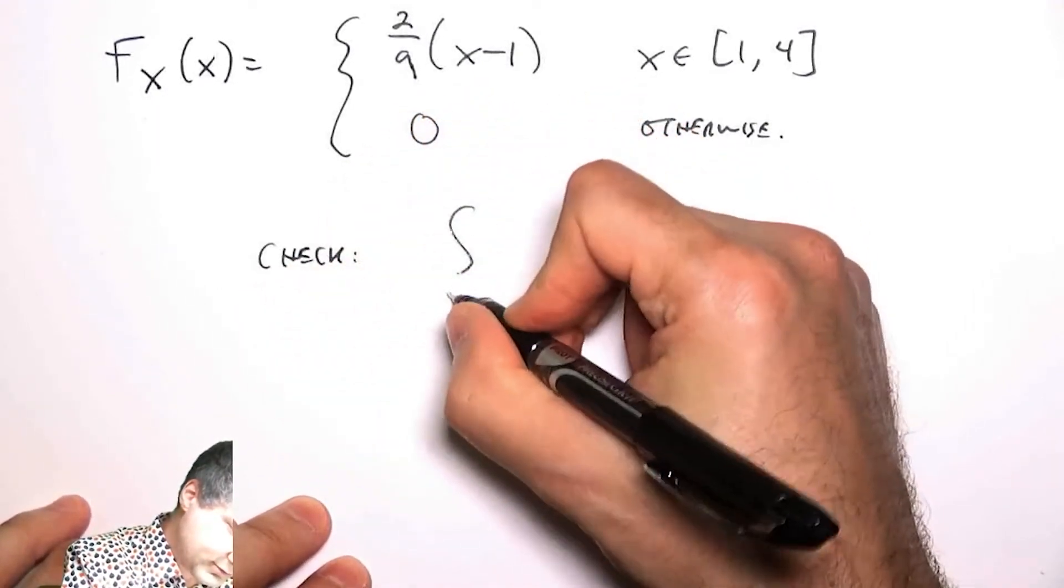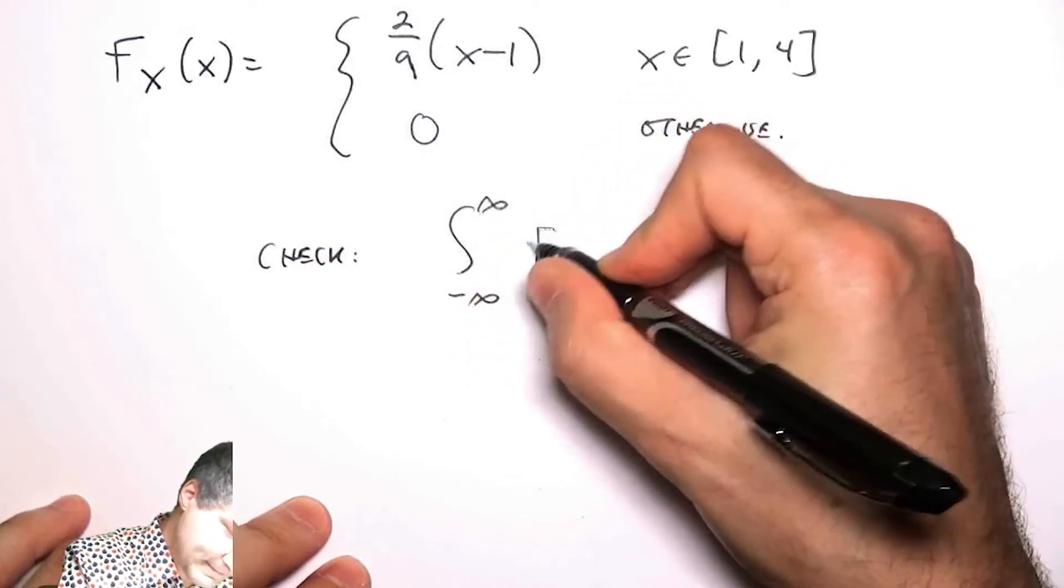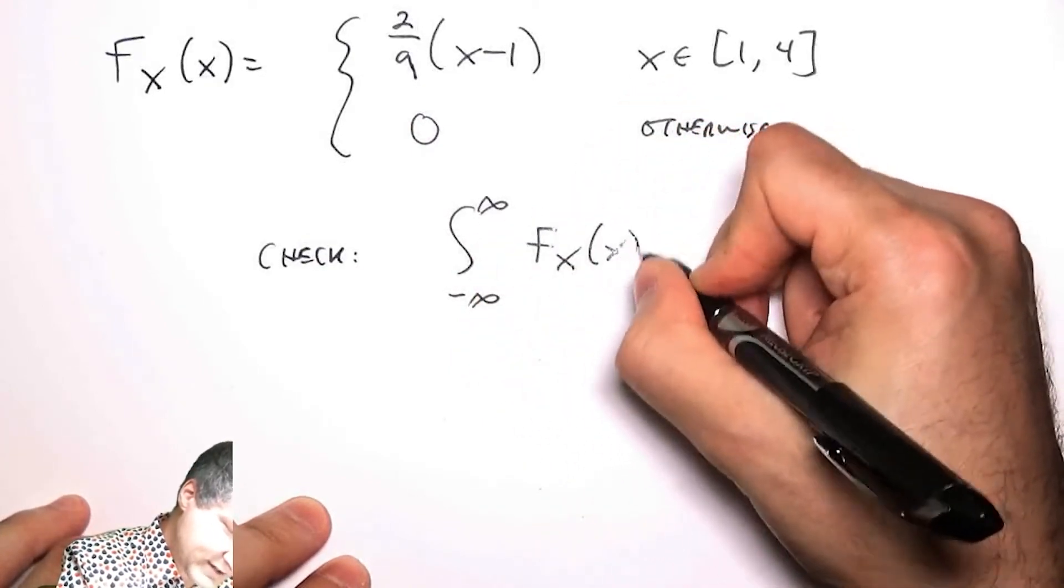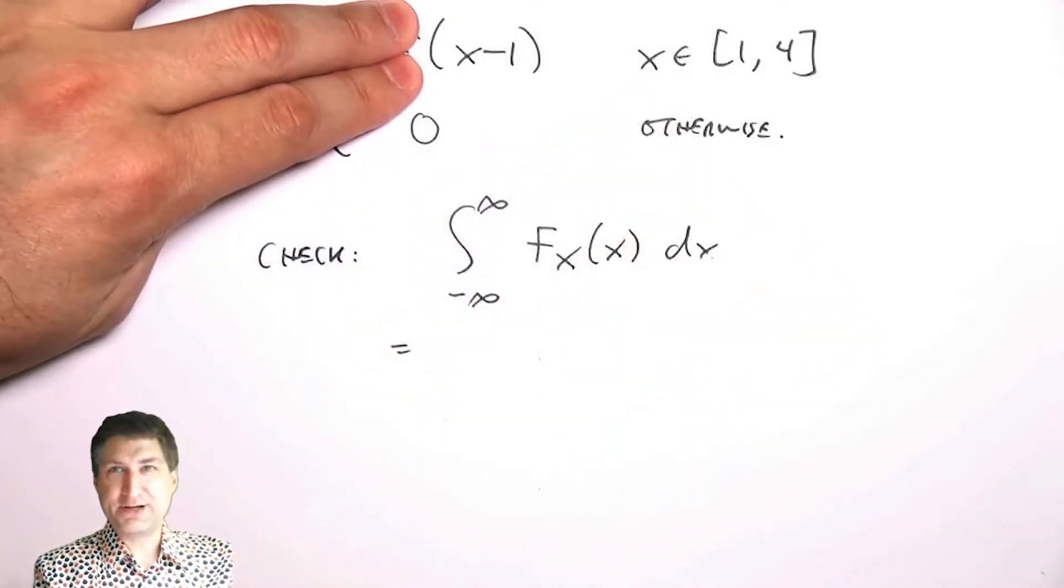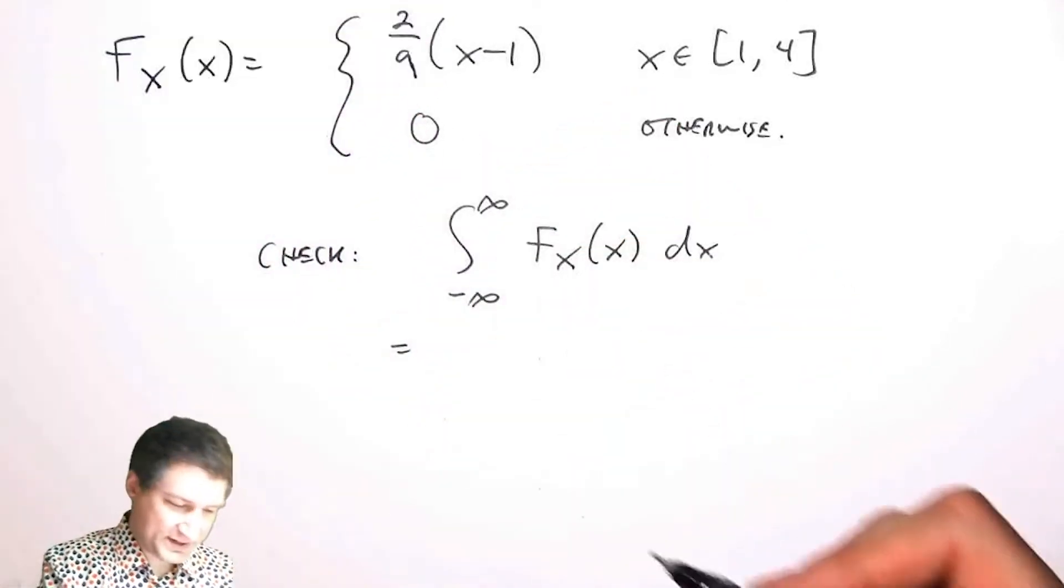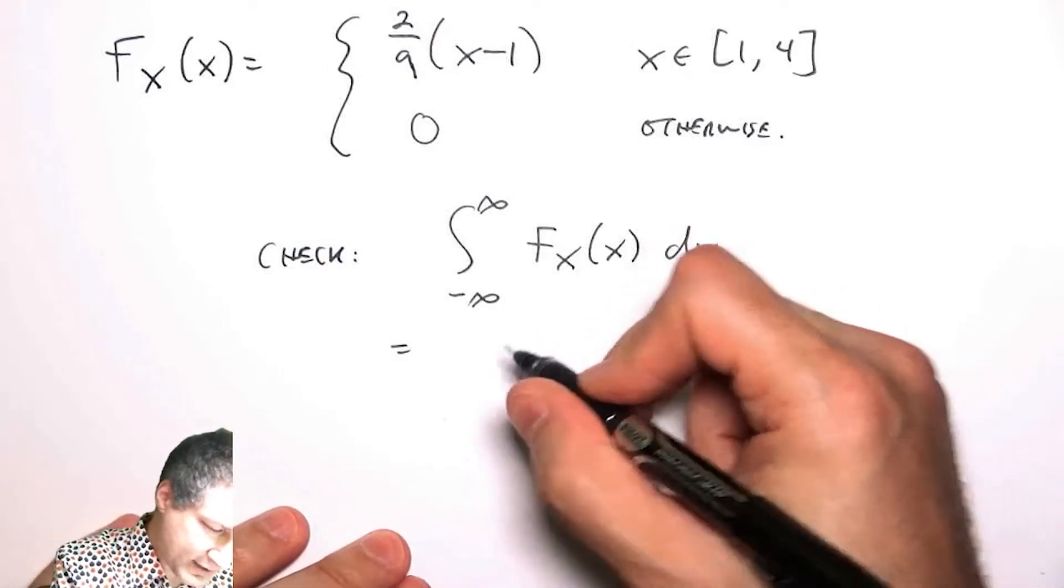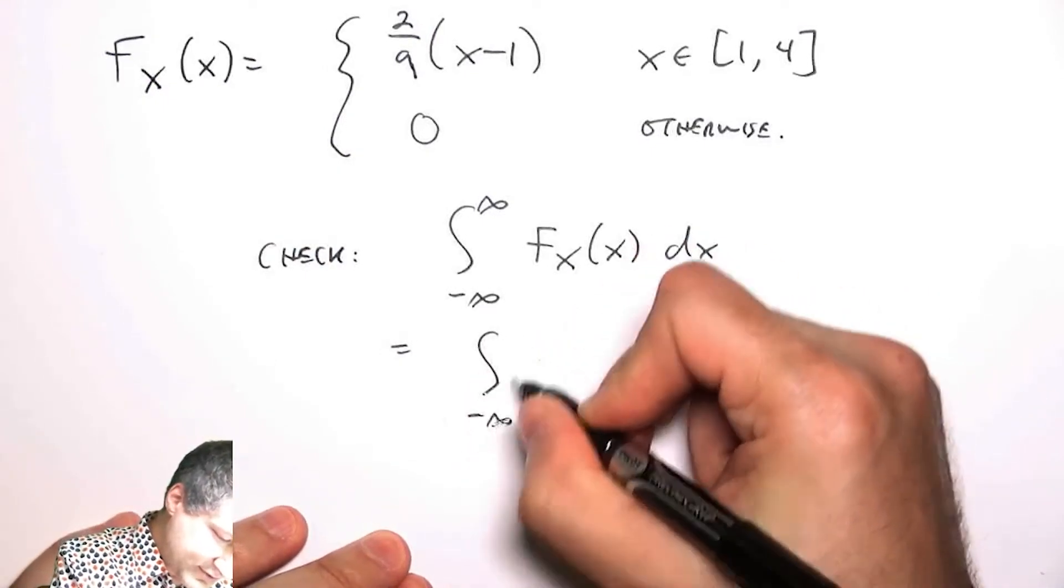that the integral integrates to one. By the way, this is a common kind of trick question where sometimes I might say, 'I don't tell you the constant; figure out the constant such that this is a valid PDF.' This is kind of the same problem, so let's just do the integral.